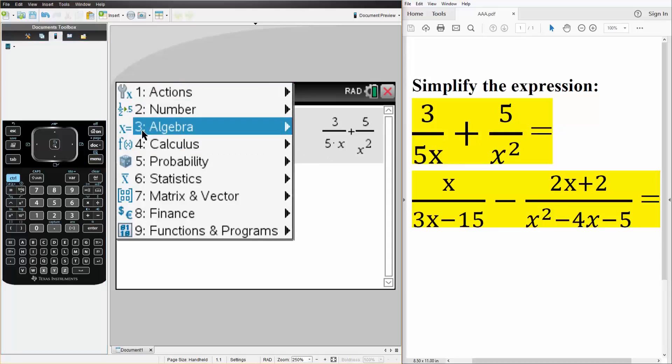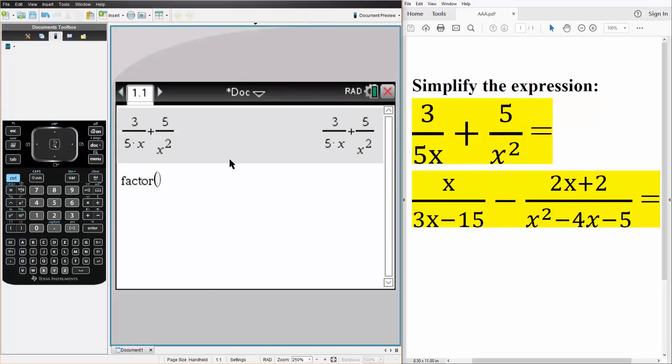So we hit menu, we hit algebra, we hit factor, and we simply write the answer, hit enter. This is the answer in simplified form where we have a common denominator.